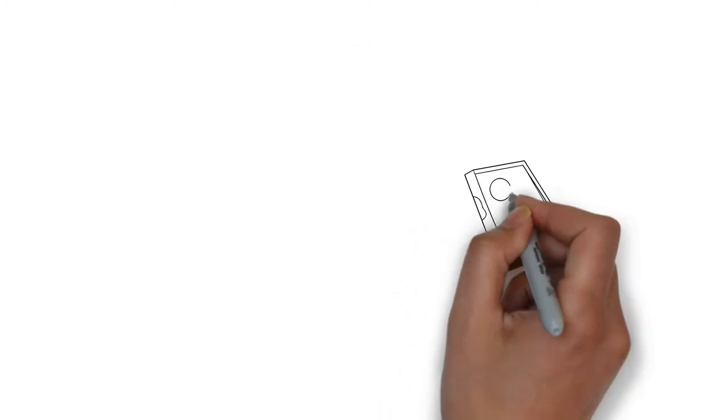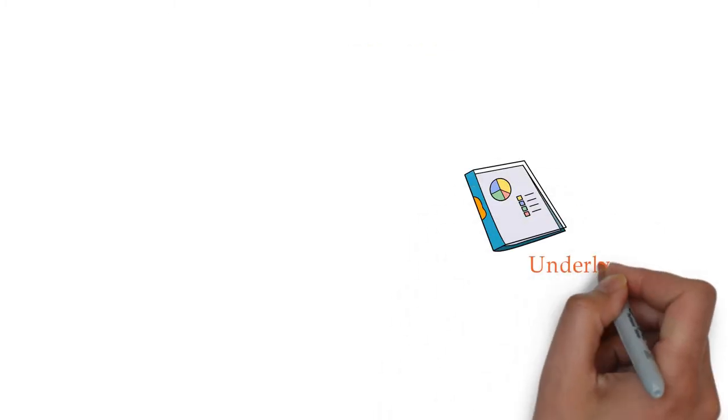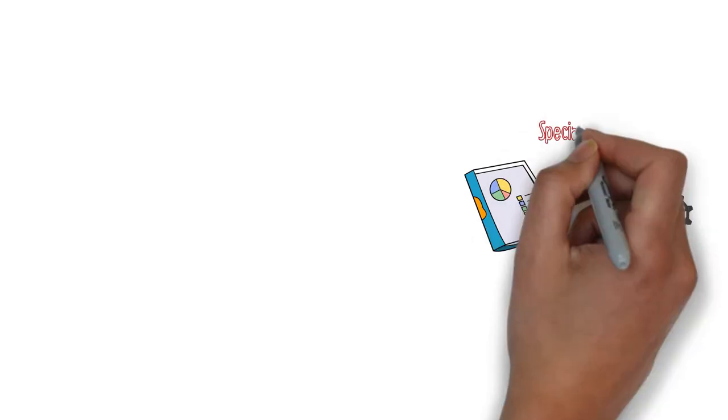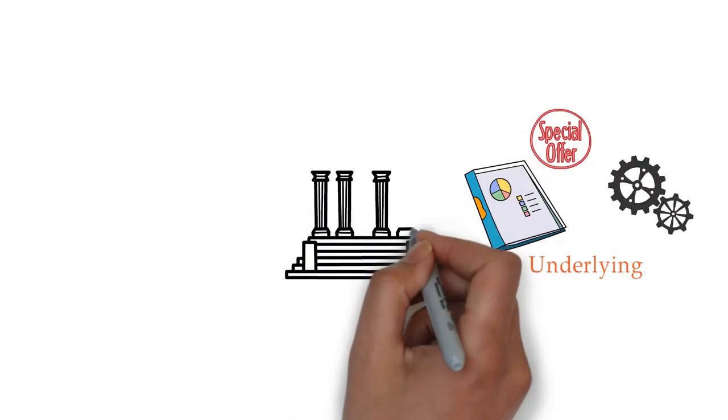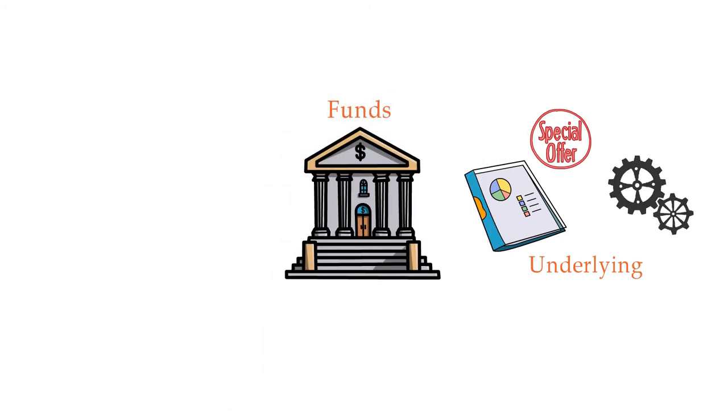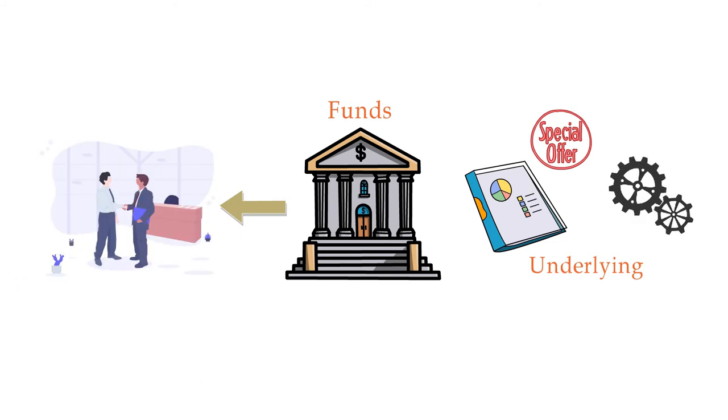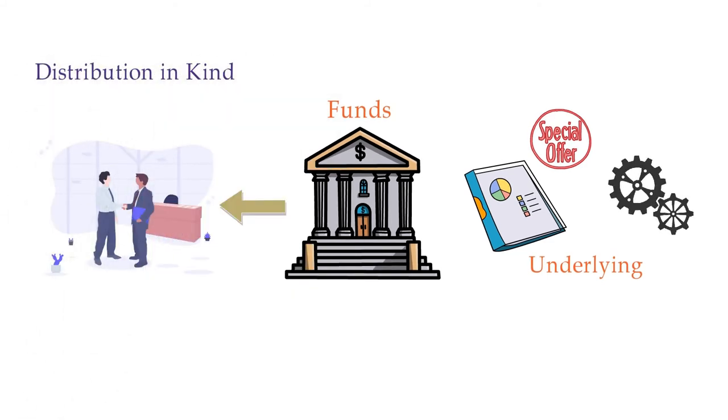Sometimes an underlying investment distributes publicly traded shares or stocks to the private equity funds rather than cash, and they pass on those stocks to limited partners. This is known as distribution in kind.